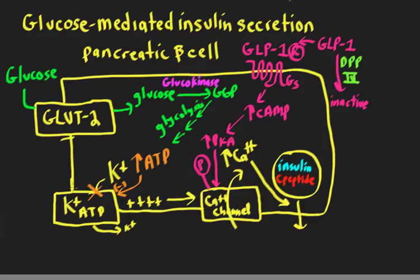These potassium channels are special because they're regulated intracellularly by ATP levels. When ATP goes up inside the beta cell, there are nucleotide binding sites on the potassium channel which bind ATP and cause the channel to close.